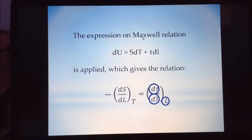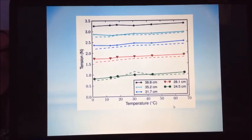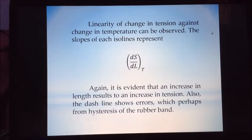As the slope at each length, the slope of each length, will give ds, which is the entropy. The linearity of change in tension against change in temperature can be observed. The slopes of each isolines represent ds over dl at constant temperature. It is evident that an increase in length results in an increase in tension. Also, the dash lines show errors which perhaps from hysteresis of the rubber band.